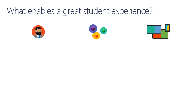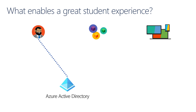But what enables these great student experiences? We have to take a look at two fundamental services. The first service is the Identity Platform: Azure Active Directory. Azure Active Directory is the authentication and authorization platform for the Microsoft 365 Cloud. Any Microsoft Cloud solution leverages Azure Active Directory to provide access to the applications. Third-party applications can also integrate with Azure Active Directory. So from an end user perspective, the end user is defined in Azure Active Directory — so when Alison typed her username and password, she was authenticated against Azure Active Directory.